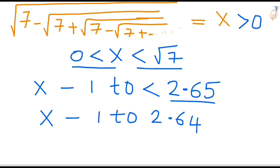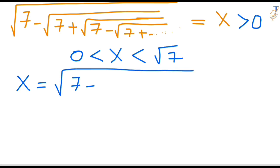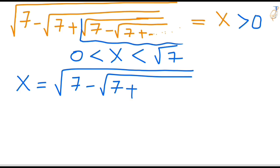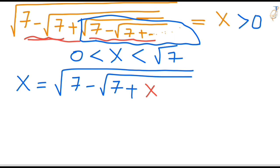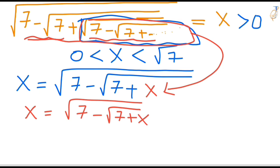Let's find the exact value of X. We have X equal to square root of 7 minus square root of 7 plus... If you observe this continuous term, it is exactly the same as the whole expression. So we can write that inner term as X. Now we have X equal to square root of 7 minus root of 7 plus X.